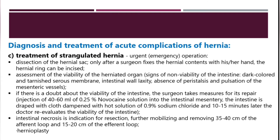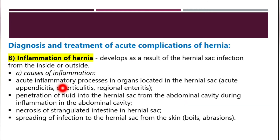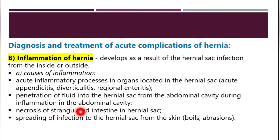The next complication is inflammation of the hernia sac, which develops as a result of hernia sac infection from the inside or outside. Causes include acute inflammatory processes in organs located in the hernia sac, such as acute appendicitis, diverticulitis, or regional enteritis; penetration of fluid into the hernia cavity from the abdominal cavity; necrosis of strangulated intestine in the hernia sac; and spreading of infection from the skin, such as boils or abrasions.